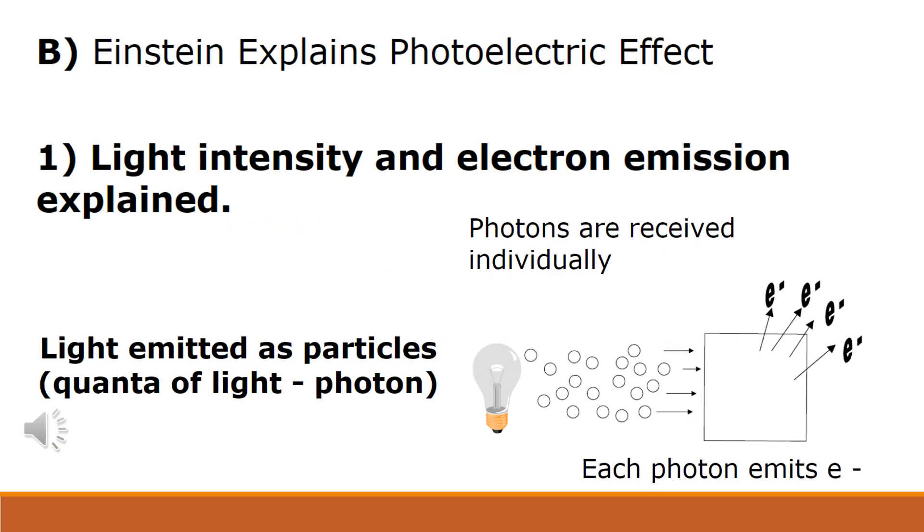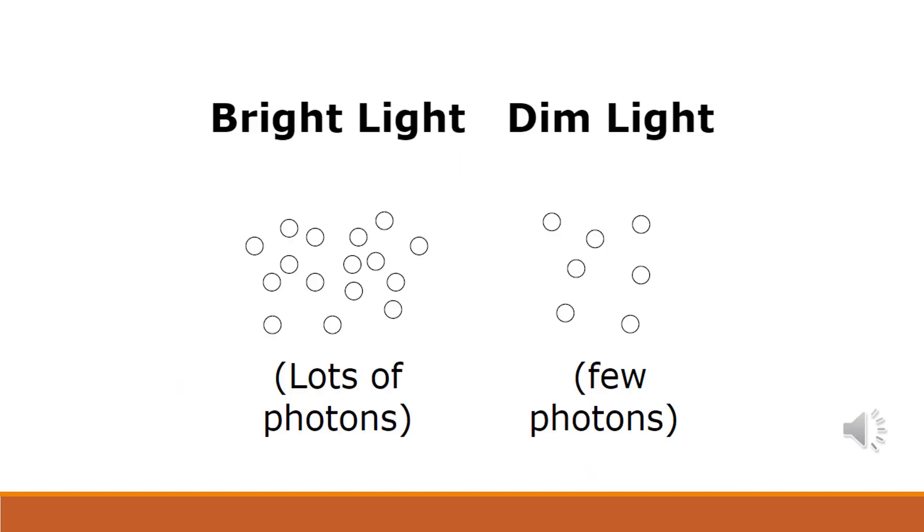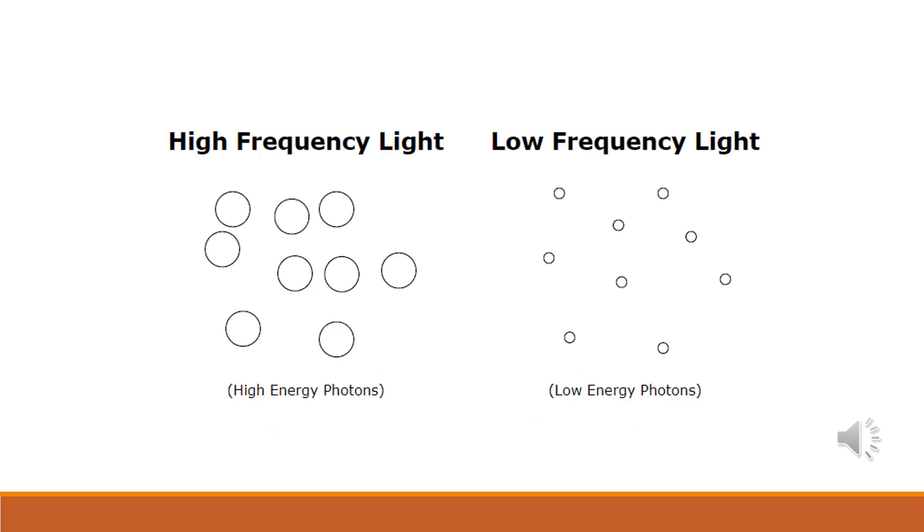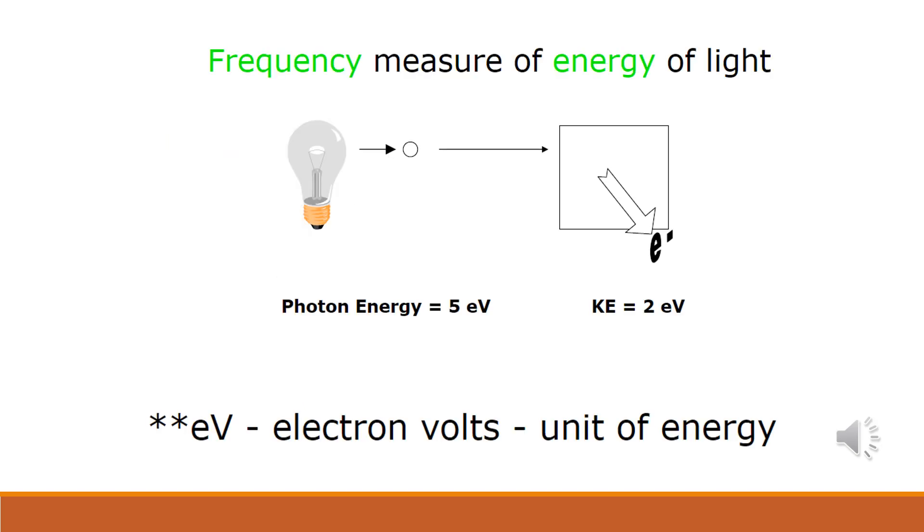Einstein explained the photoelectric effect by proposing that when light interacted with the electrons in the photoemissive material, it acted like a particle. Each particle of light or photon was responsible for emitting a single electron. And photons were received individually and could not combine with other photons the way a wave could. Bright light had a lot of photons and that's why if the frequency was high enough, it could emit a lot more electrons than dim light. High frequency light, as the quantum theorists stated, was high energy light and therefore could eject electrons from the metal with a higher energy.